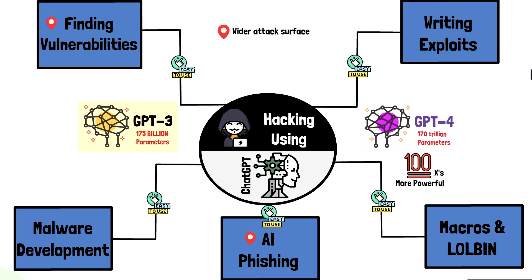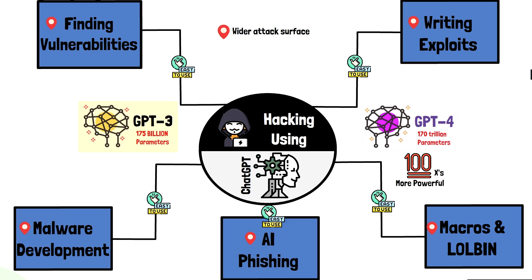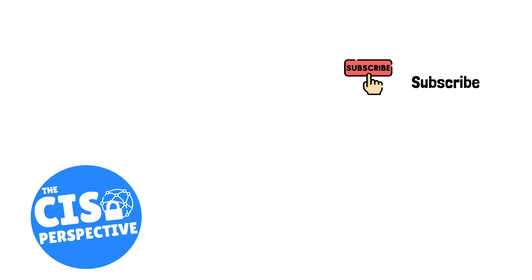What this means to security organizations and users alike is that AI is completely changing the game at a pace that blue teams simply cannot keep up with. Expect the attack surface to be much wider now that traditionally complex items have become easy for even script kiddies to deploy, meaning an increase in less sophisticated attacks by amateurs overall. However, advanced attackers have new capabilities and tools they previously did not possess, leading to more advanced attacks and zero-days. Security professionals need to keep up to date with AI advances and think of innovative ways to utilize AI for defense, because adversaries are already using it offensively.